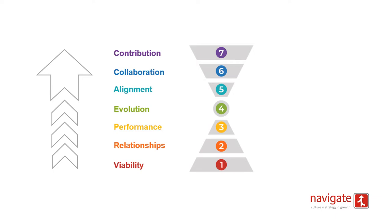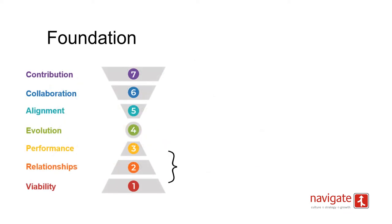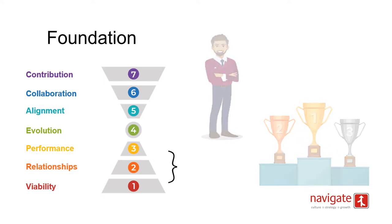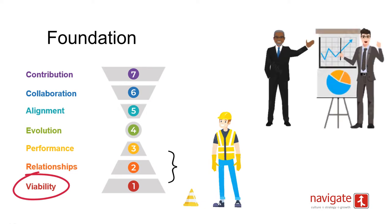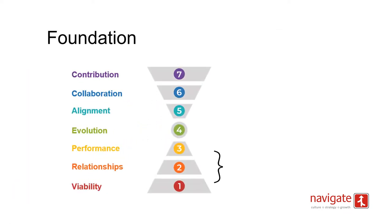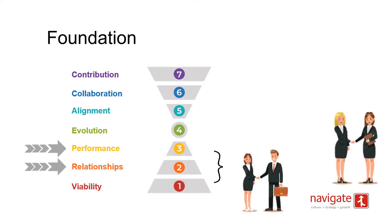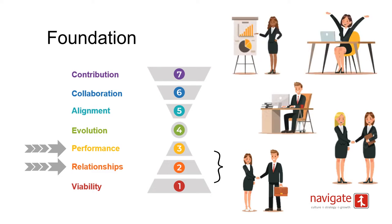To start, we split the model into three sections: foundation, evolution and impact. We view levels 1 to 3 as the foundational aspects of culture — those that focus on managing the success of the business. These include elements such as ensuring the safety of employees and the financial viability of the organisation, being mindful of how people interact, communicate and show respect for others, and implementing systems and processes to support success and become distinct among competitors.